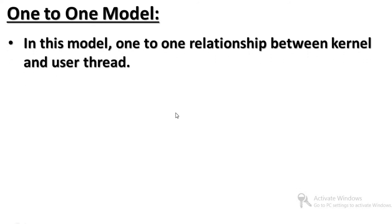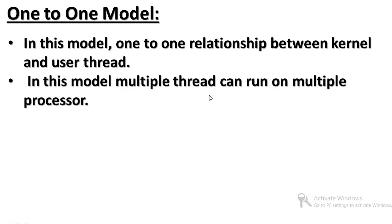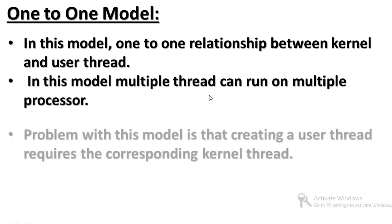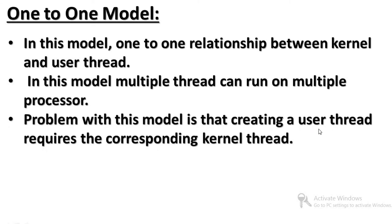Next is the one-to-one model. In this model, there is one user-level thread mapped to one kernel-level thread — a one-to-one relationship between kernel and user thread. Multiple threads can run on multiple processors. The problem with this model is that creating a user thread requires creating a corresponding kernel thread.